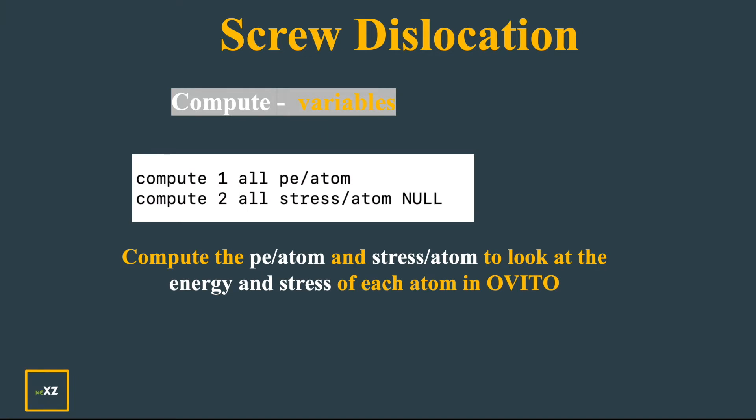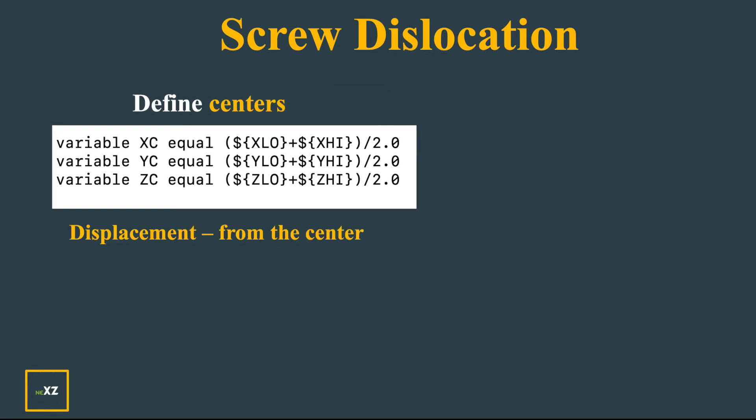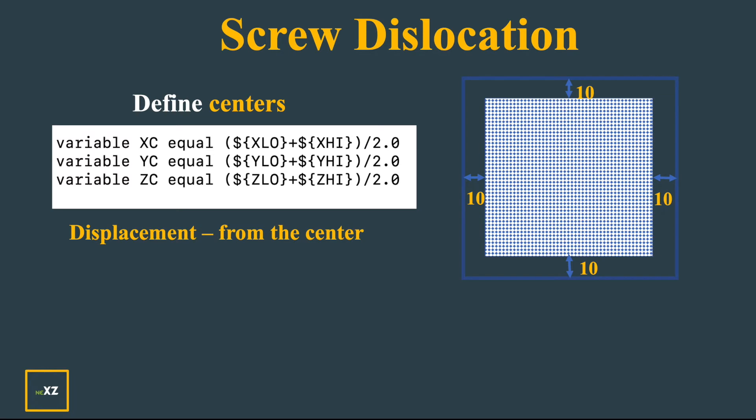Now I compute the variables: potential energy per atom and stress per atom. If you want to dump, you can dump custom files using c_1 and c_2, and you can open in OVITO and color based on the potential energy and stress in an atom.